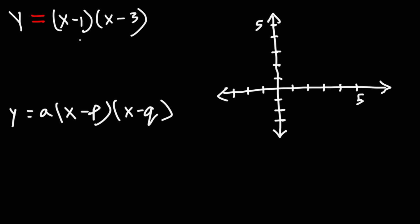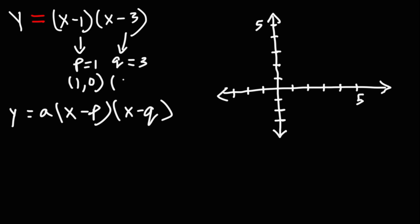In this example, we can see that p is positive 1 and q is positive 3. p and q represent the x-intercepts, so the two intercepts that we have are 1 comma 0 and 3 comma 0.